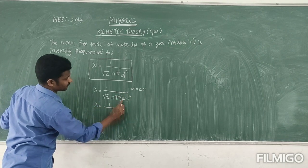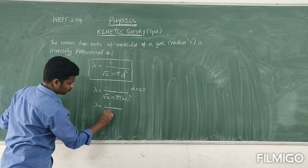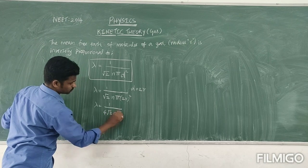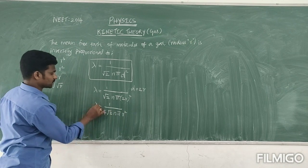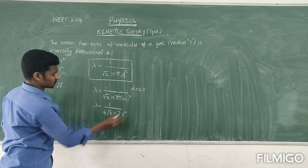Therefore, lambda is equal to 1 divided by, 2 square is 4, so 4 root 2 n into pi into R square. So if you observe that, except R square, the remaining is constant.